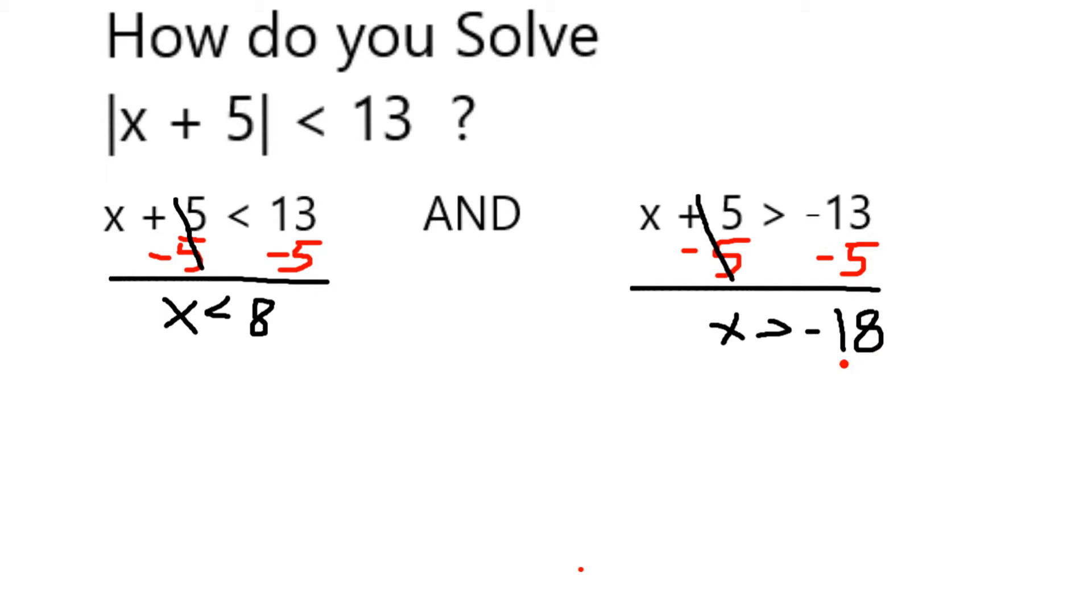Again, we can see that if we were negative 18, negative 18 will give us a negative 13 in here, which would equal exactly 13 if we took the absolute value.